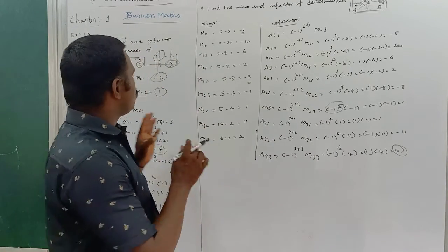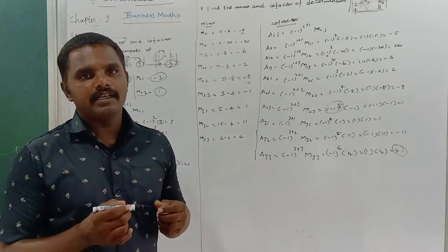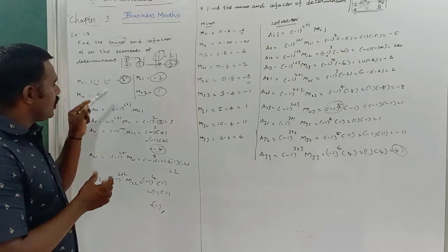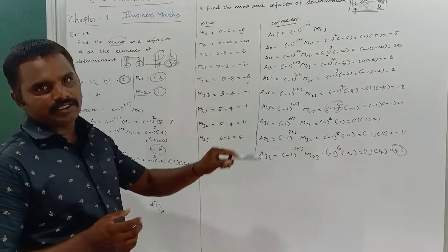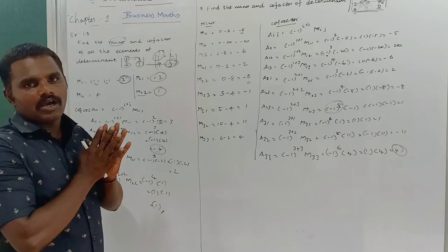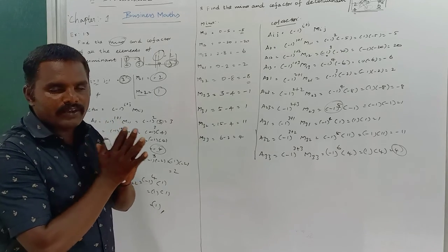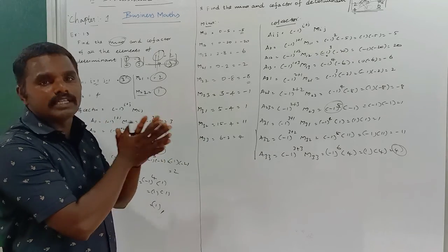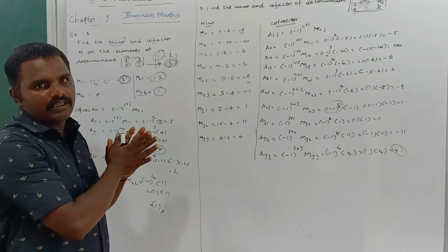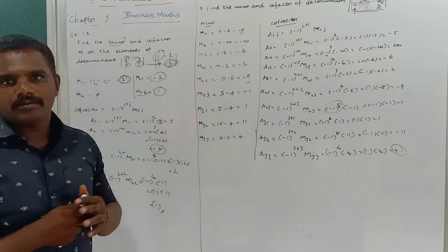This is the two-method approach to find the minor and the cofactor for 2×2 and 3×3 matrices. You can see the difference in how to find minors and cofactors for these two determinants. Listen carefully, then practice. Thank you.